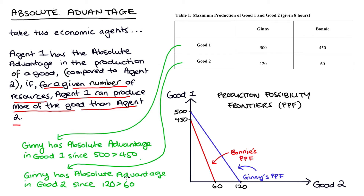We can see absolute advantage visually using our production possibility frontiers — our PPFs. Looking at the diagram in the bottom right-hand corner, the blue line is Ginny's PPF. Ginny's PPF tells us about the maximum amount of good one and good two that Ginny can make, and all the possible combinations of the two goods, given that she has eight hours. We draw this line from the information we have in the table. Of special interest when thinking about absolute advantage are our axis intercepts.